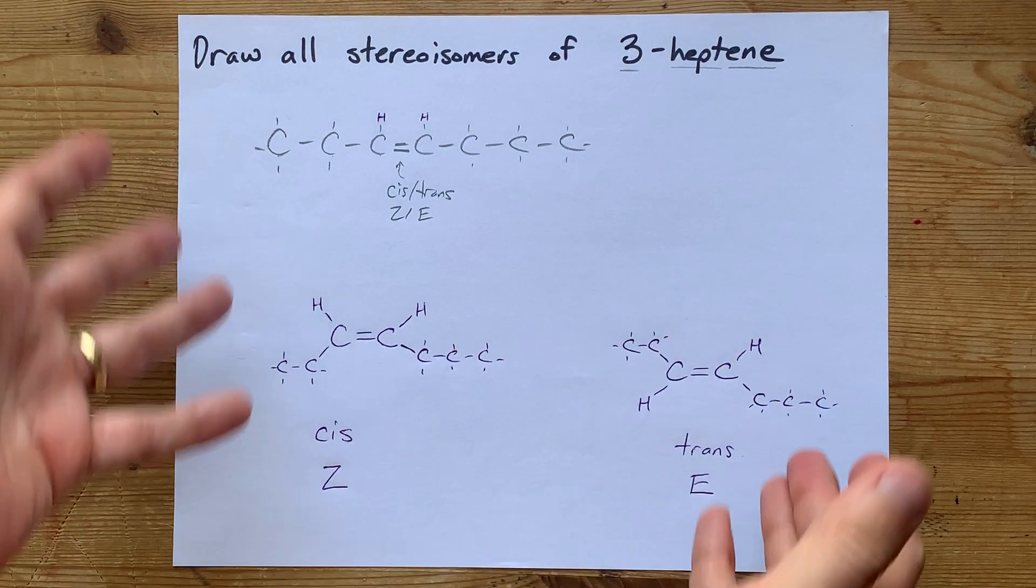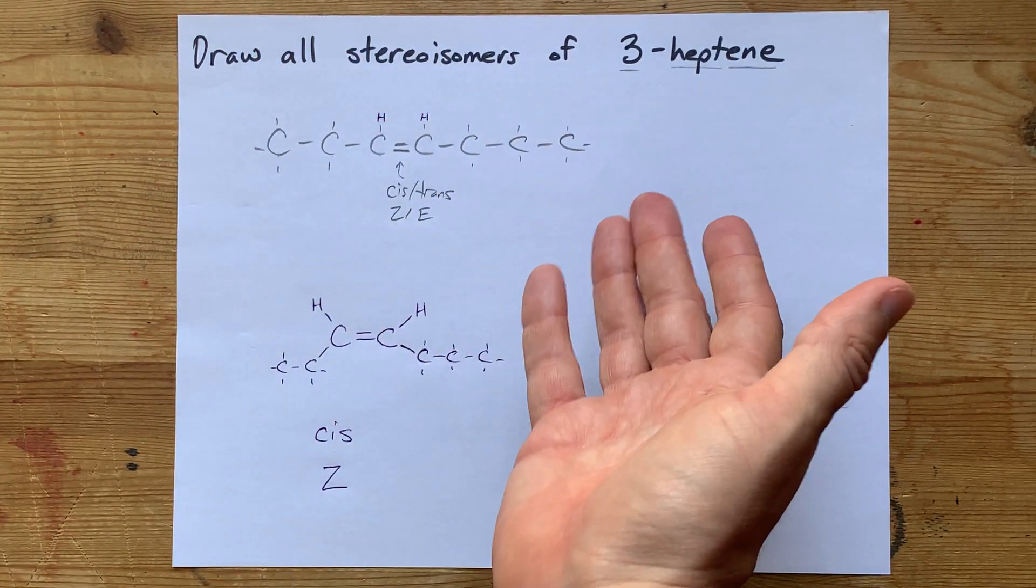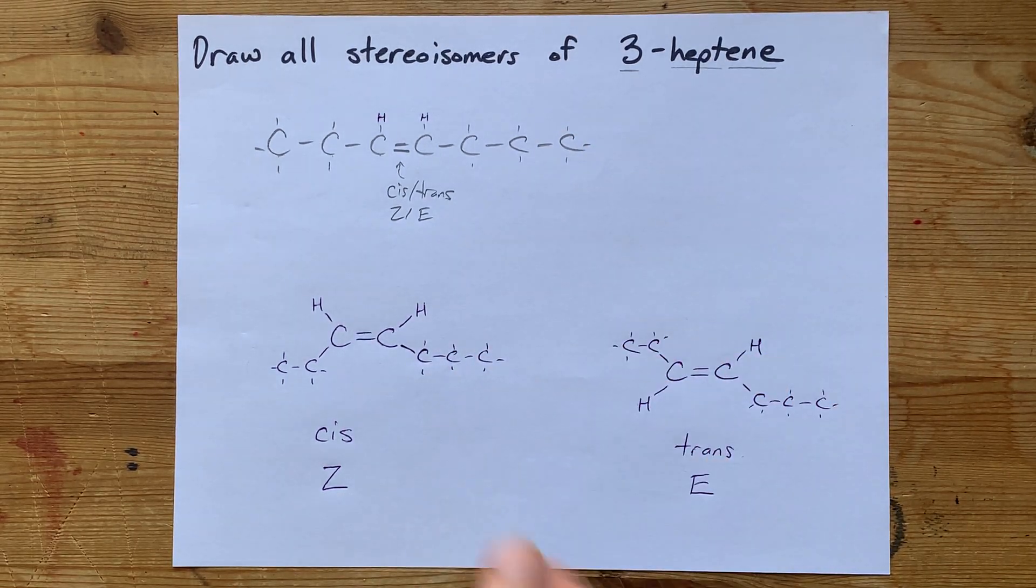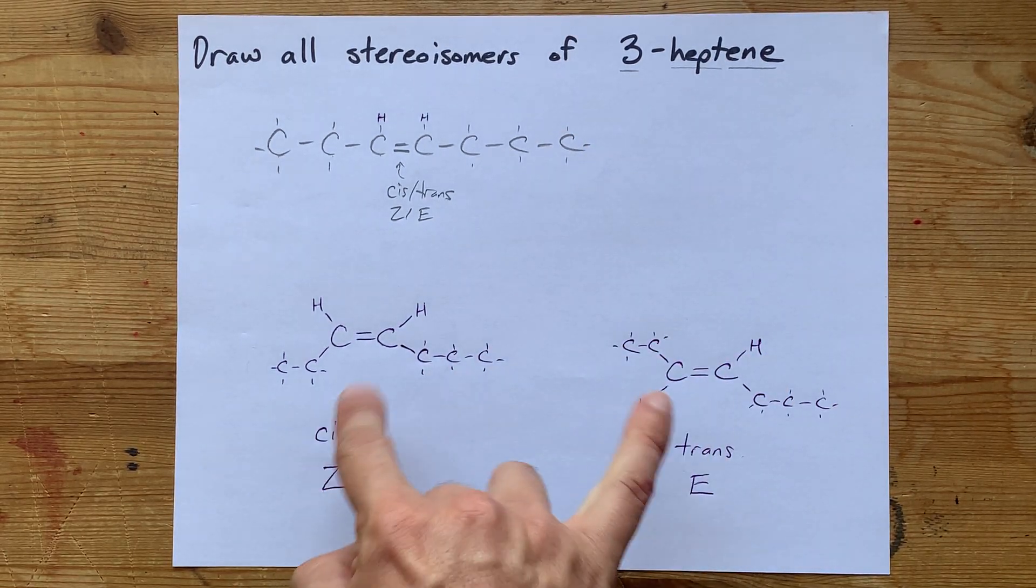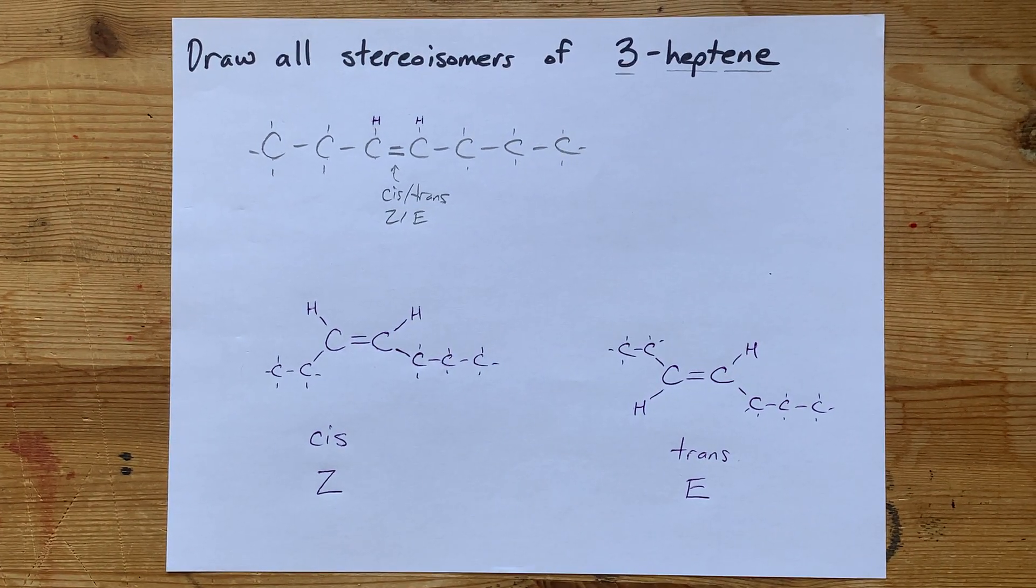If that's your jam, you're done. These are the two stereoisomers. Saying draw all stereoisomers makes it feel like there's supposed to be like fifty, right? Nah, there's two. Two versions for each double bond. Nice. Thanks for being with me, and best of luck.